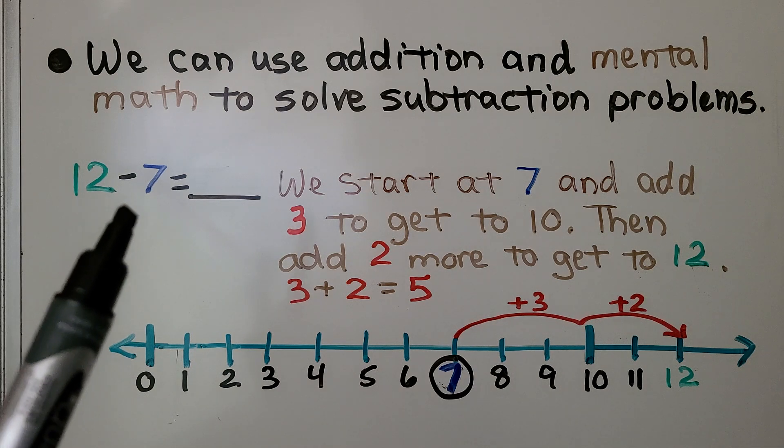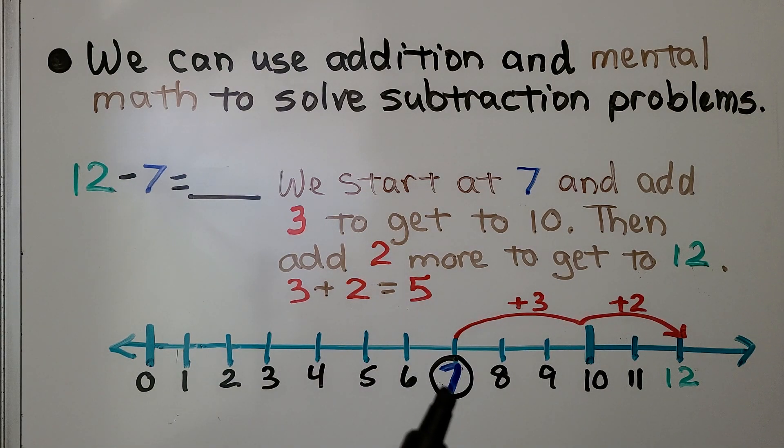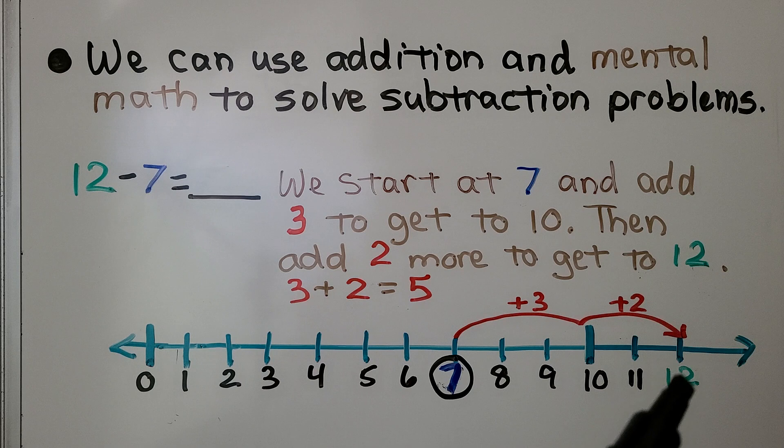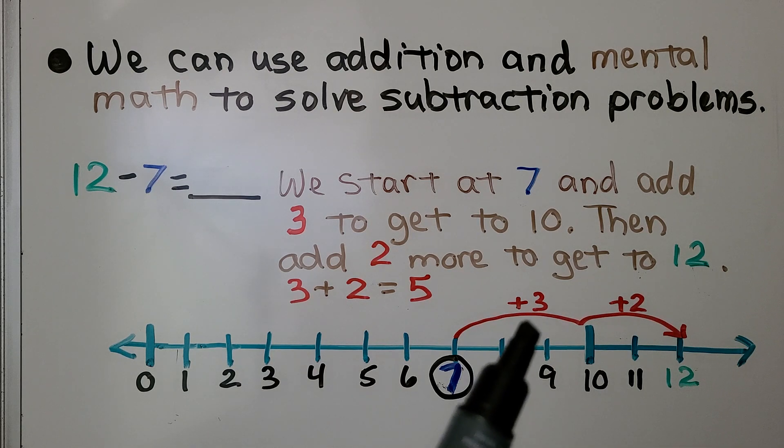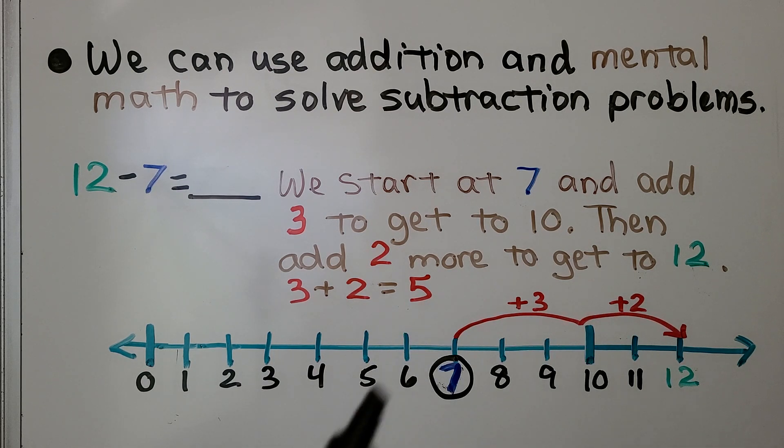If we have 12 minus 7, we start at the 7, the subtrahend, and we add 3 to get to 10. It's a tens number. Then we add 2 more to get to 12. We added a 3 and a 2. That's 5. 12 minus 7 is equal to 5.